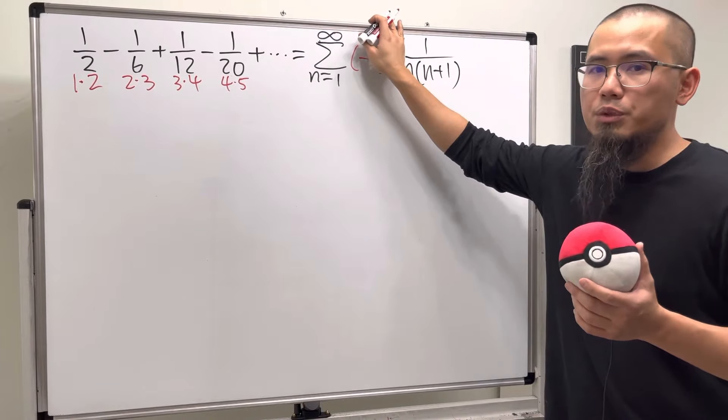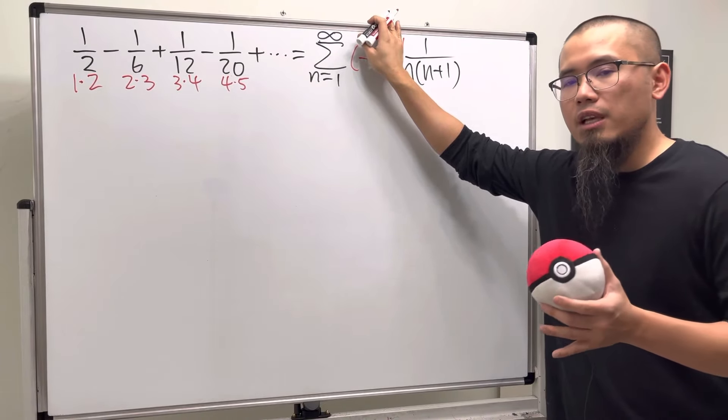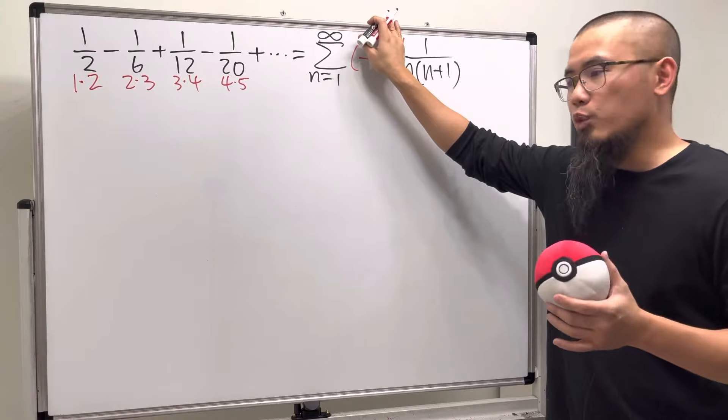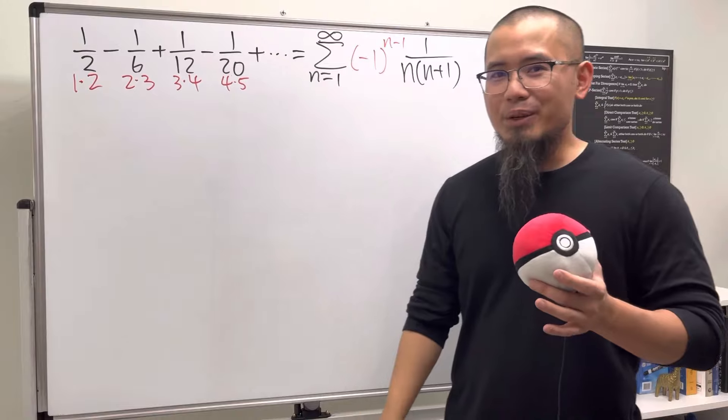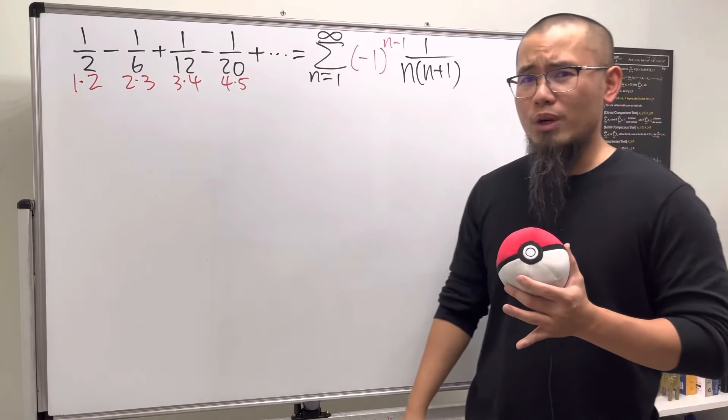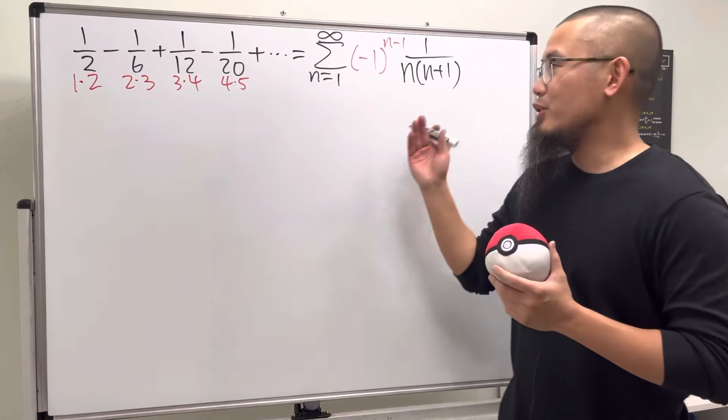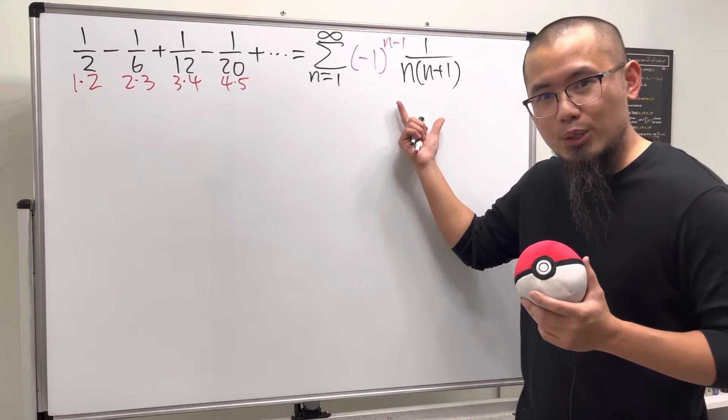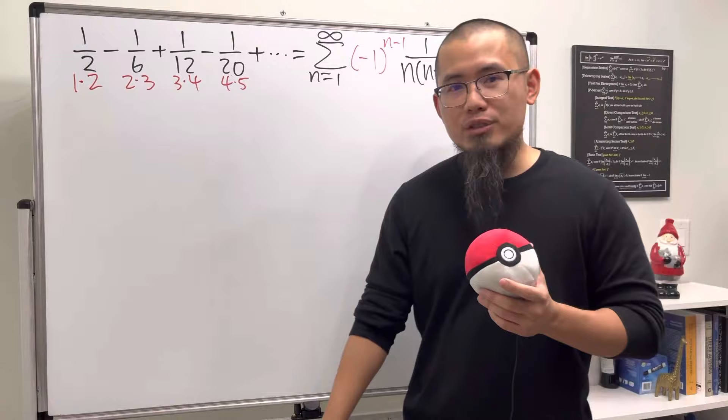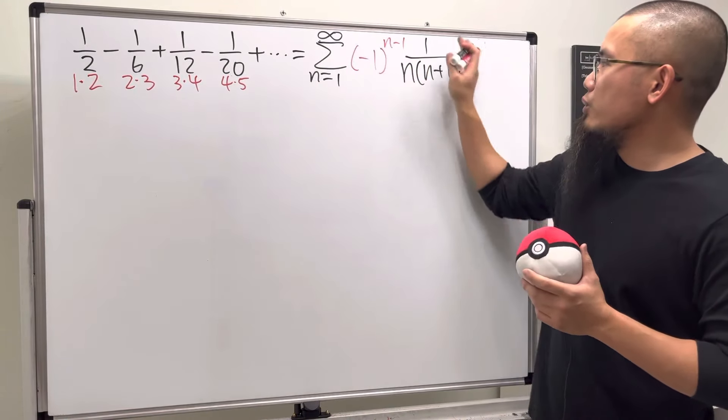We can do partial fractions and we can see a lot of cancellations and be happy. But we do have that alternating factor, so unfortunately we are not going to see the cancellations like the ones we used to. But this is still pretty cool, so check this out. We mentioned partial fractions, right? We can still do partial fractions.